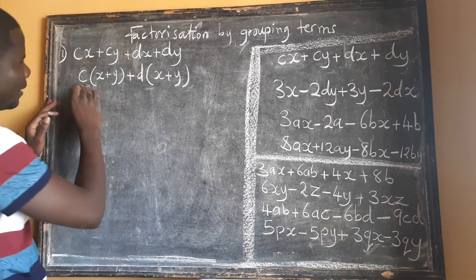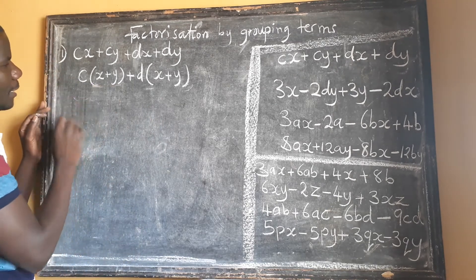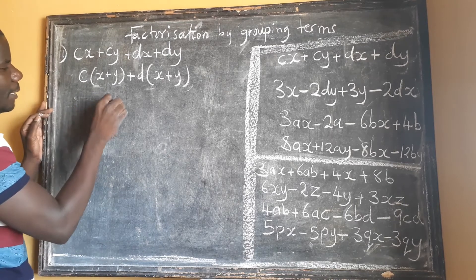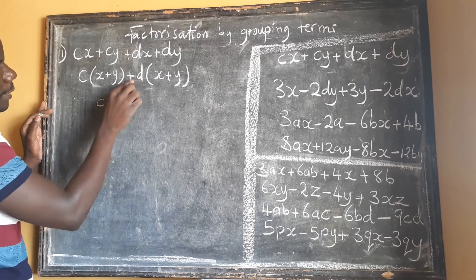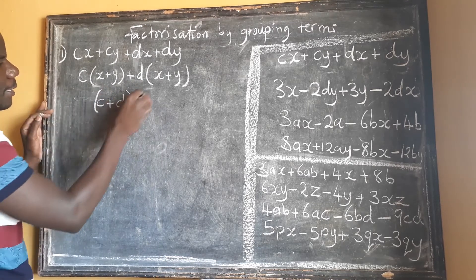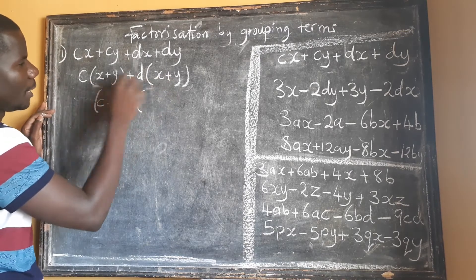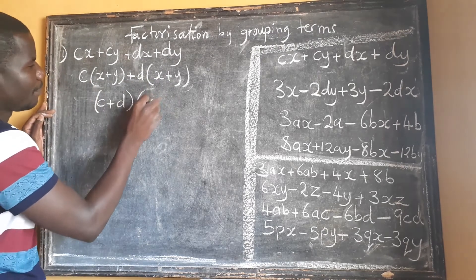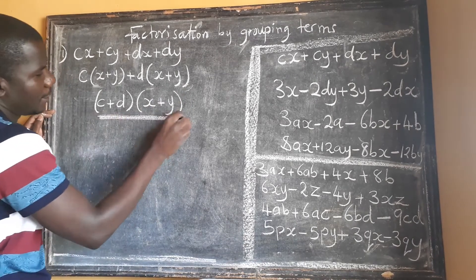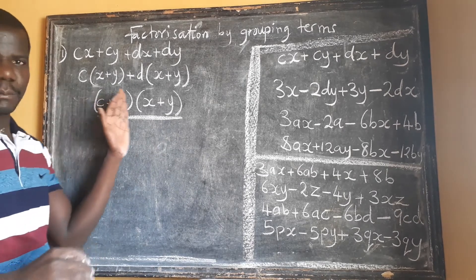Having done this, our final answer is written as follows: we get (c + d) as one factor, and (x + y) as the other factor — that is the common bracket. So our answer is (c + d)(x + y). When you expand and simplify this, you'll be able to get back to your original expression.